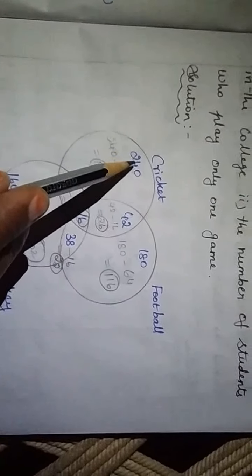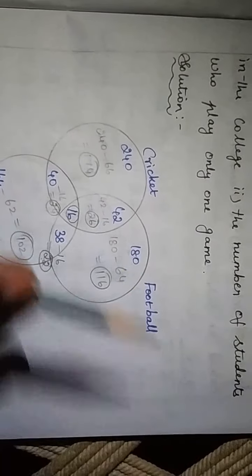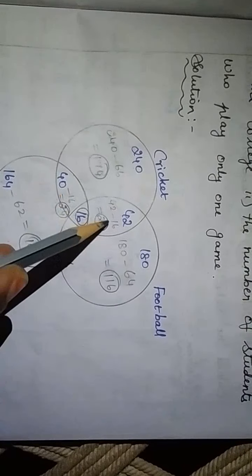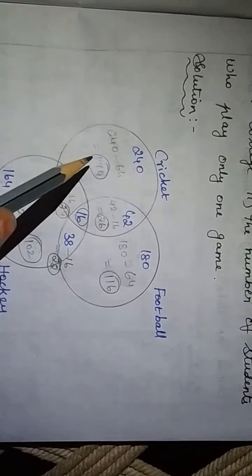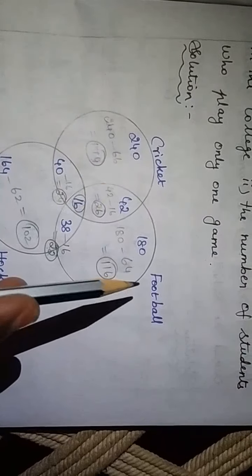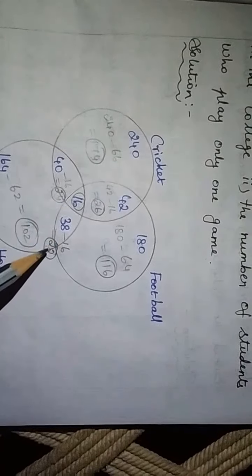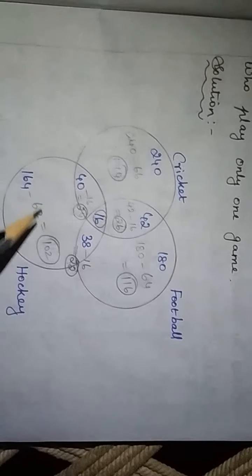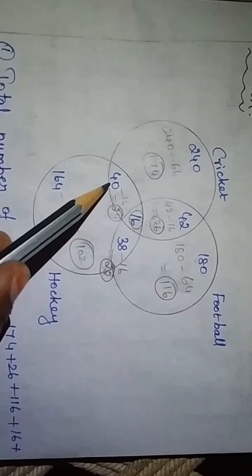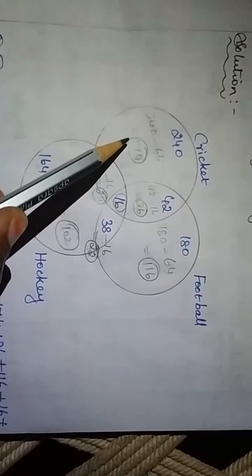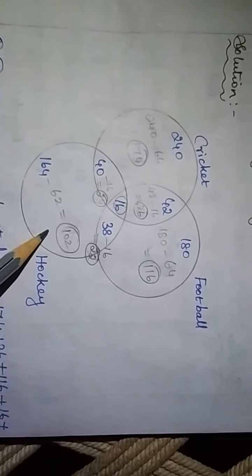Now calculating students who play only one sport. For cricket: total cricket is 240, minus 26 (cricket and football only), minus 16 (all three), minus 24 (cricket and hockey only) = 174. For football: 180 minus 26 minus 16 minus 22 = 116. For hockey: 164 minus 24 minus 16 minus 22 = 102.